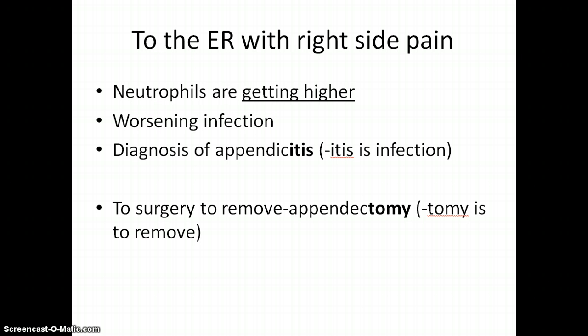Your patient is seen in the ER with right-sided pain and you check a white blood cell count and see the neutrophils are getting higher, so you know there is an infection that is getting worse and it is a bacterial infection. The doctor does more tests and diagnoses appendicitis. The suffix -itis tells you it is an infection, and he says let's do an appendectomy — the suffix -ectomy meaning to remove.